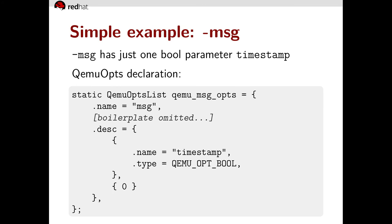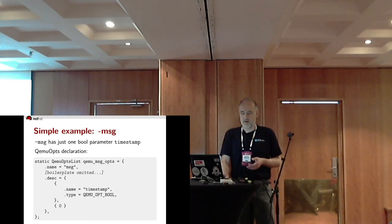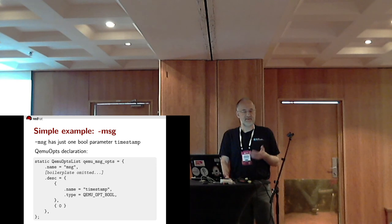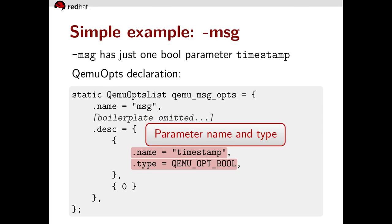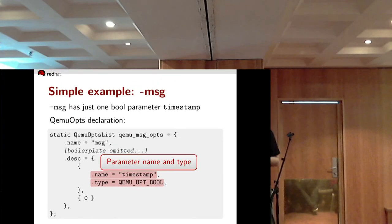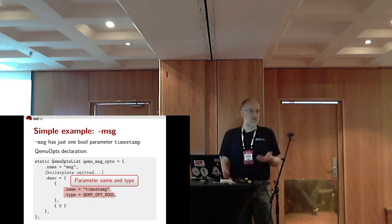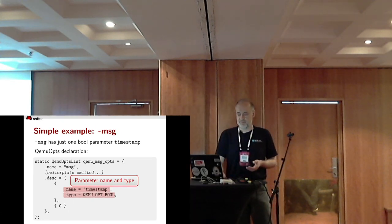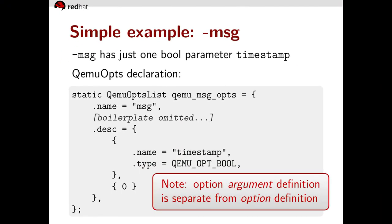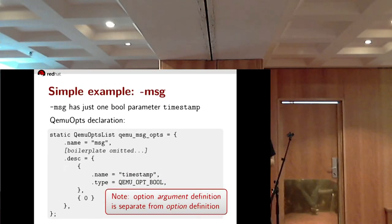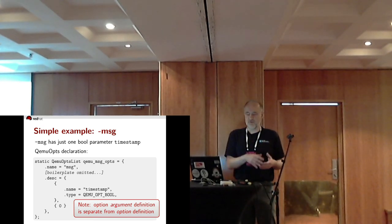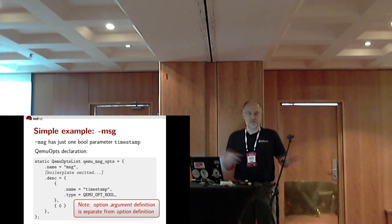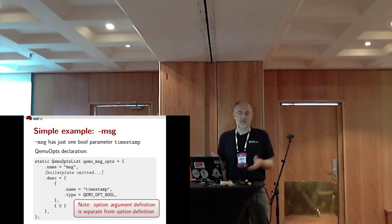Our example: dash-msg again. Recall dash-msg has a single parameter — it can be timestamp=on or timestamp=off. How do we do that in QEMUopts? Simple enough — we declare a parameter named 'timestamp' with the boolean type. QEMUopts works just fine here. Note that this option argument definition is separate from the option definition we saw earlier — they are in two different files and connected only by C code.